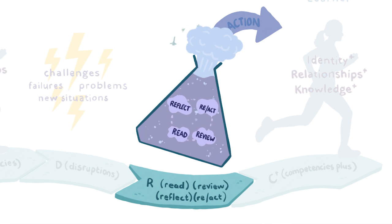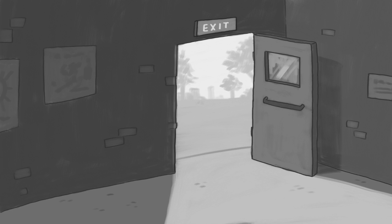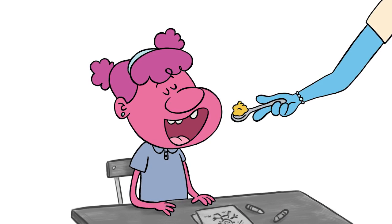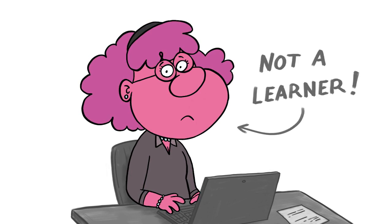I had one postgraduate student who came to our course where we concentrated on learning and not on teaching. After three days she stood up and said, 'Look, I am paying to be taught — I have not come here to work.' So she left the course, because she wanted to be spoon-fed and we required active work. She didn't have to work as a learner. That is because of the way she was at school and at university — at the postgraduate level she still wasn't a learner.